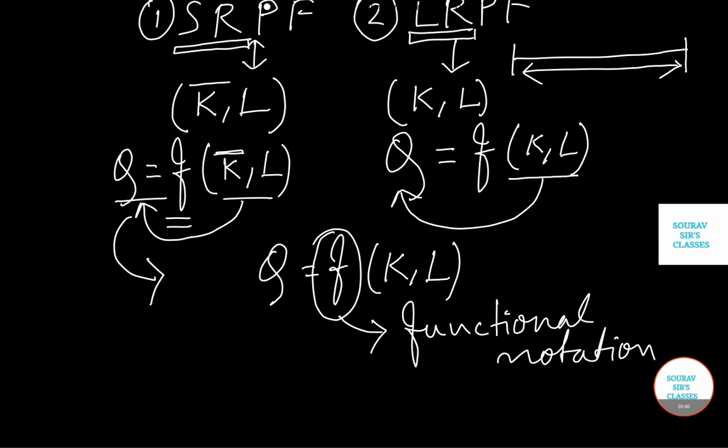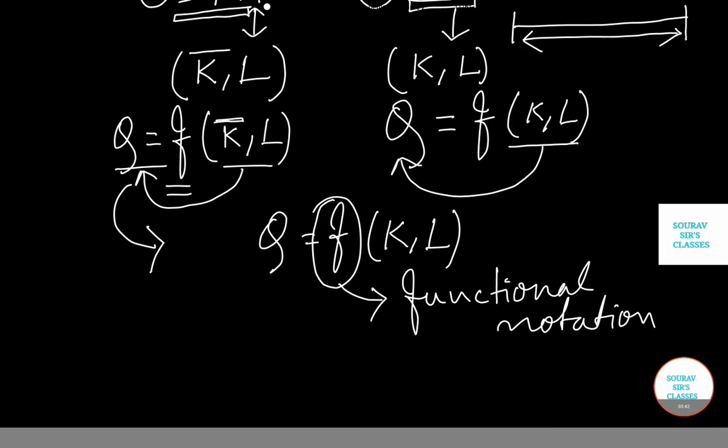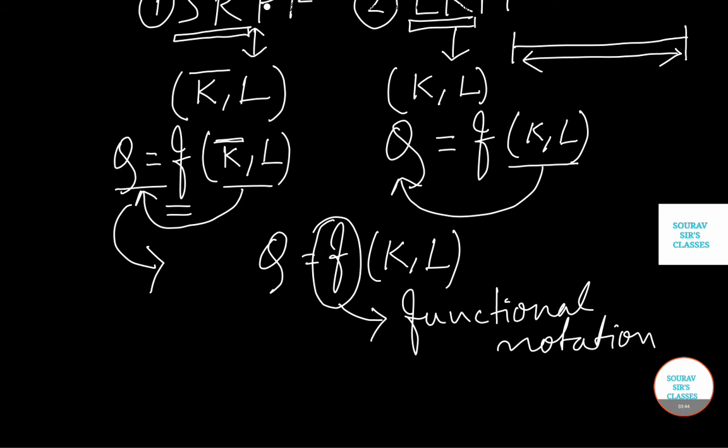Now this form of production function, we are not just specifying the actual form of production function. It can take many forms. It can take a form like this or a form like this too. We are just here saying that capital and labor are related to output.